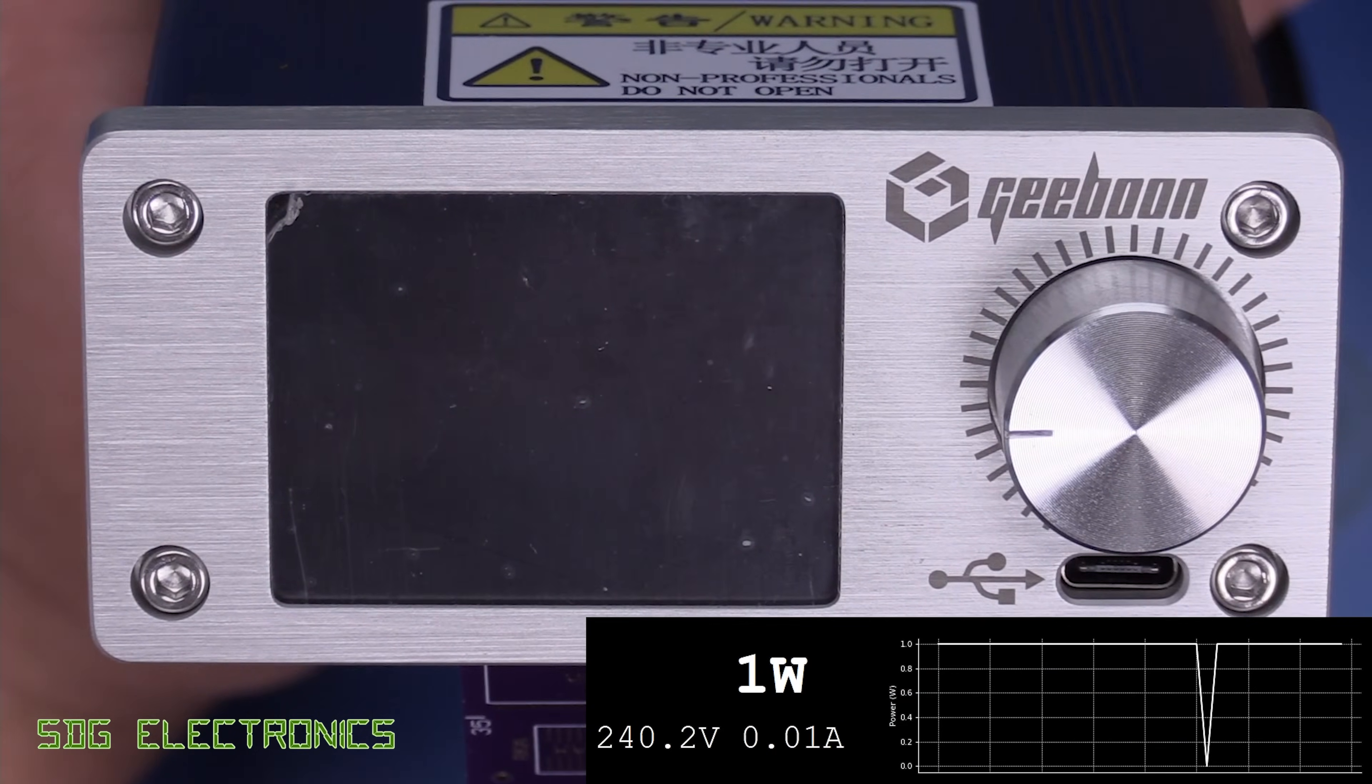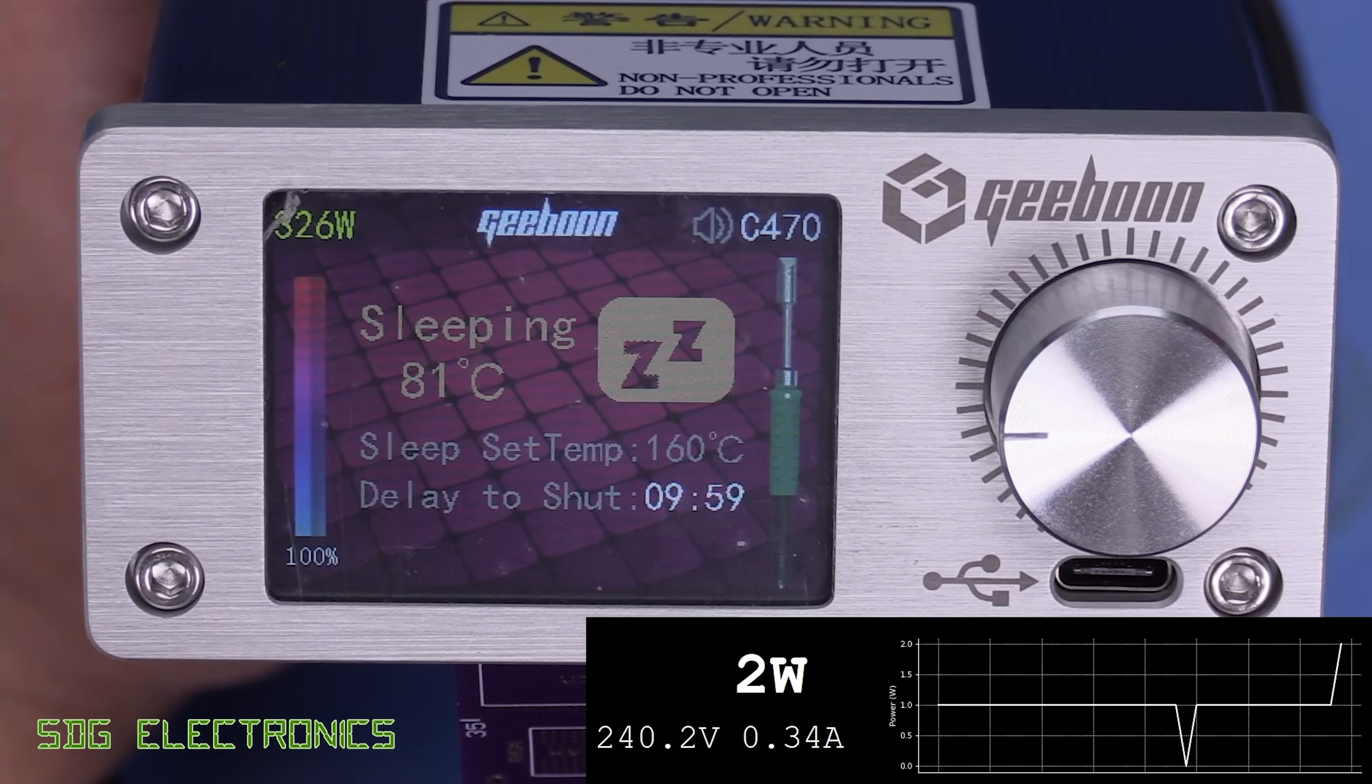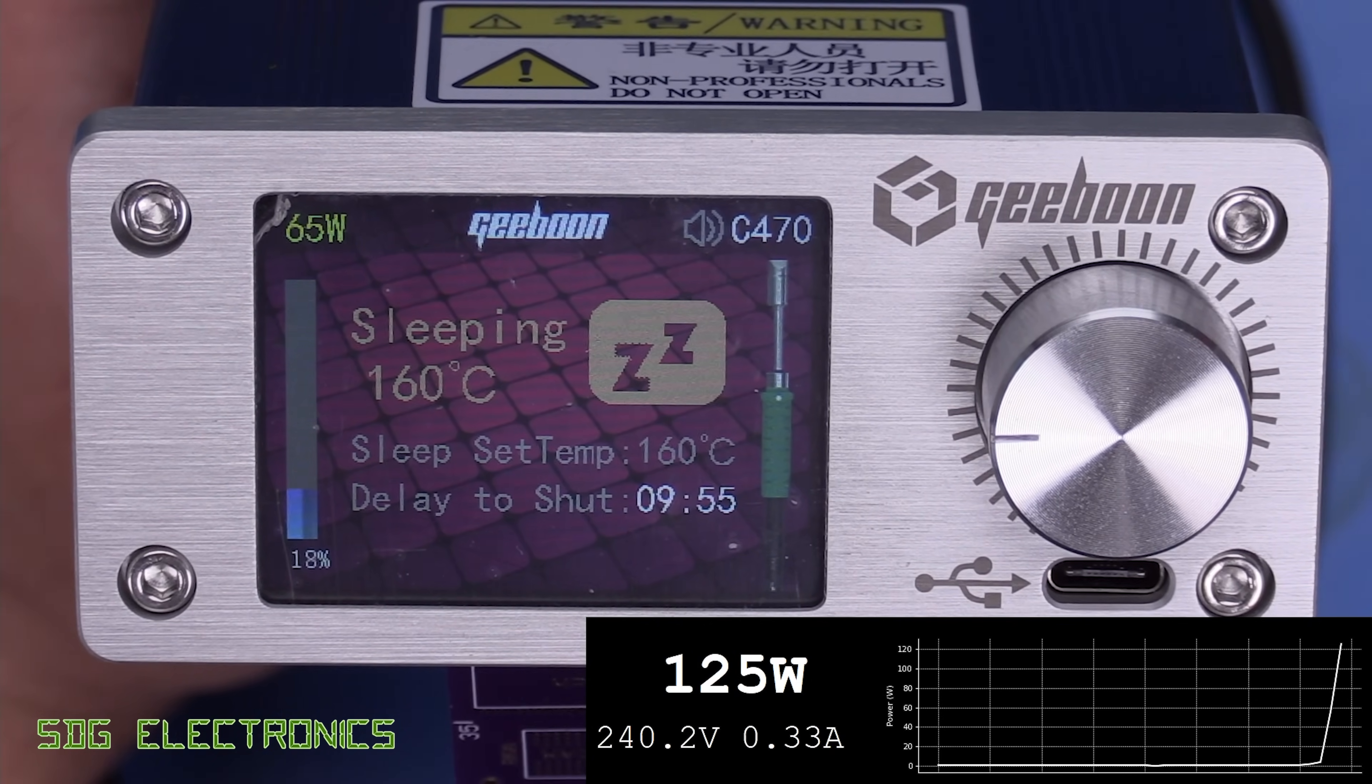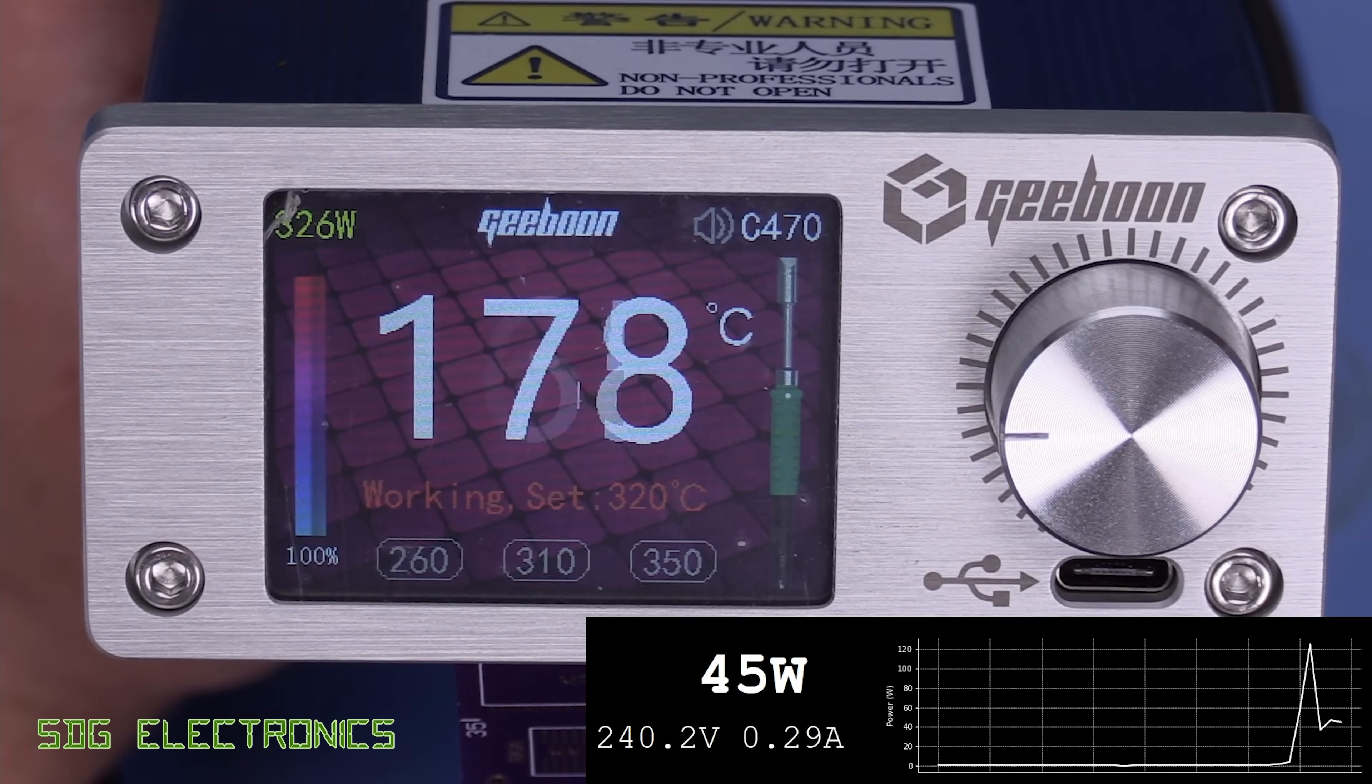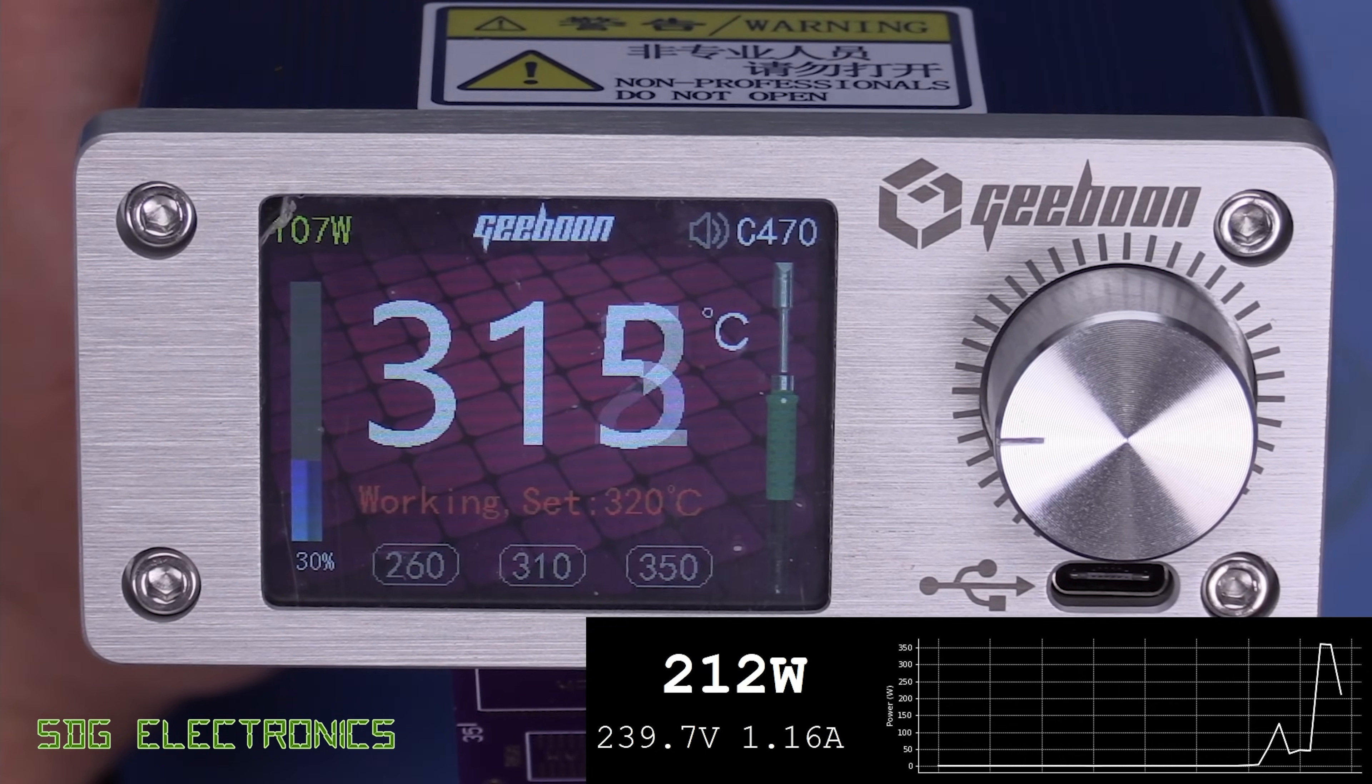Right, we've got a handpiece connected now. So let's turn on the station and see what changes. And it's just run up to the sleep temperature, about 160 degrees. And if we take the handpiece out of the cradle, here we see some really high powers there, 360 watts or so.